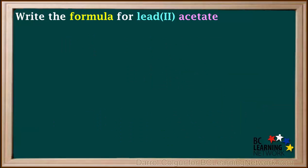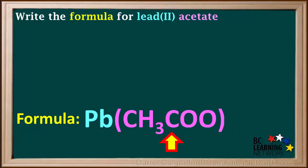So the final answer to the question is: the formula for lead(II) acetate is Pb(CH3COO)2.